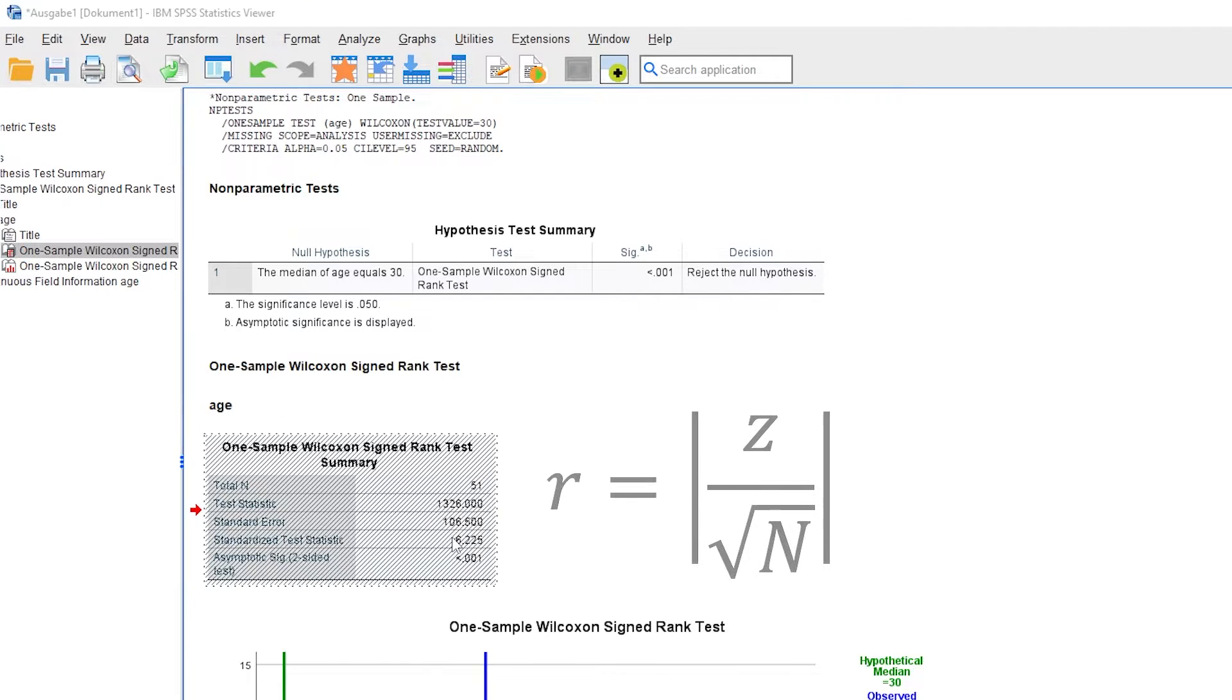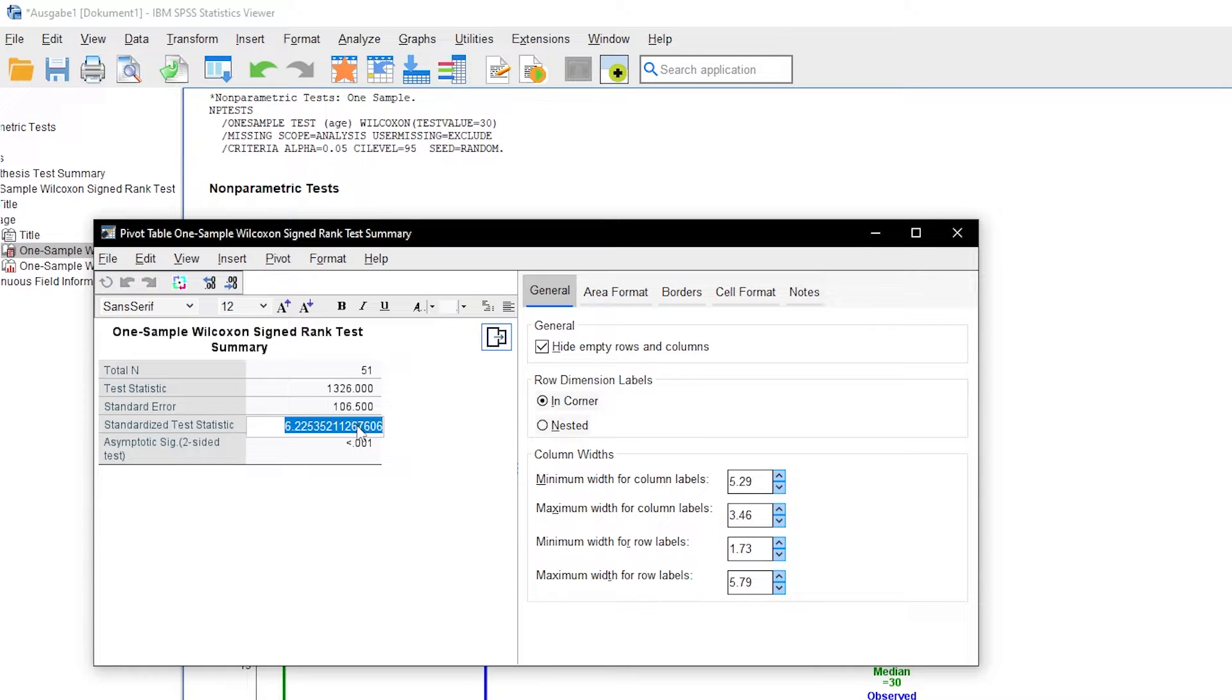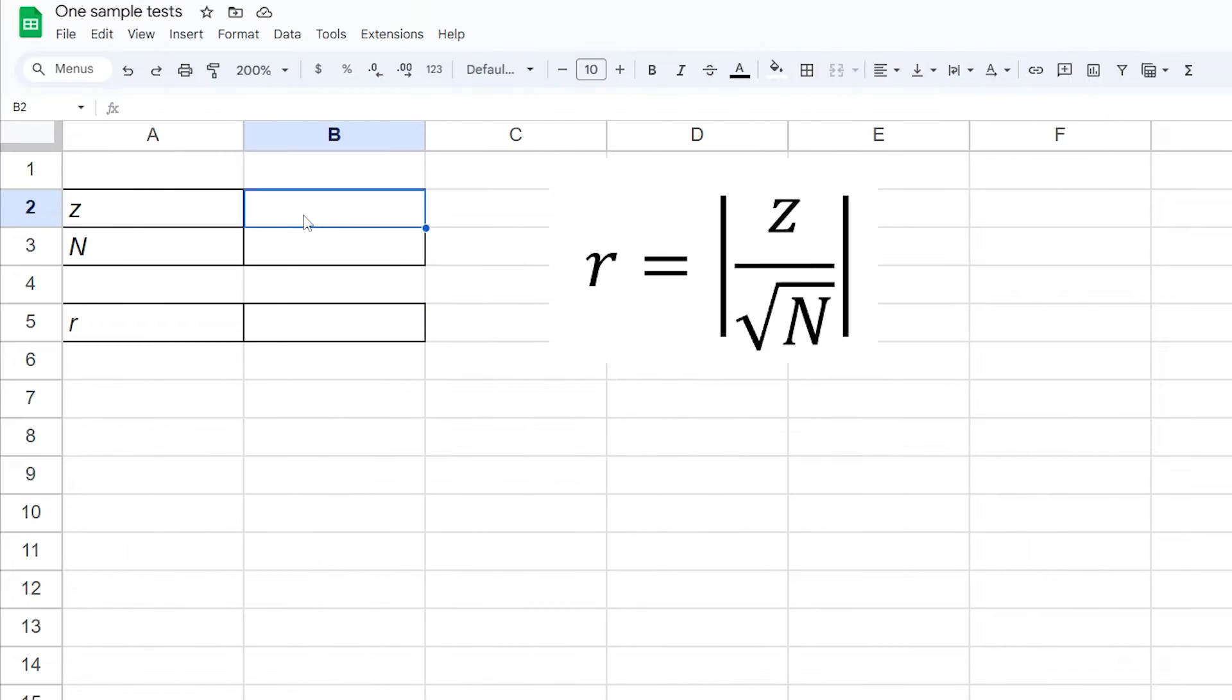If you want the calculation to be as exact as possible, I would recommend using Excel or Google Sheets and copy the standardized test statistic with all decimals available and do the calculation there. In my example, the resulting effect size R has a value of 0.872, rounded to three decimals.